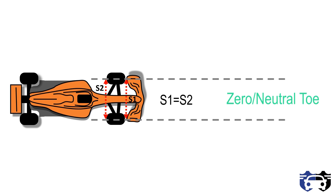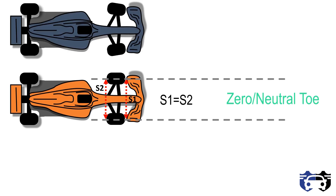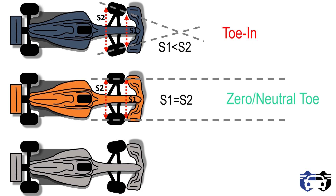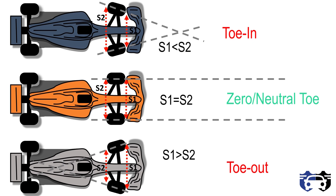If S1 equals S2, the tires are parallel and it is called zero or neutral toe. In the second case, if S1 is less than S2, the tires are converging or pointing inwards, which is called the toe-in condition. In the third case, if S1 is greater than S2, the tires are diverging or pointing outwards — this is called the toe-out condition.